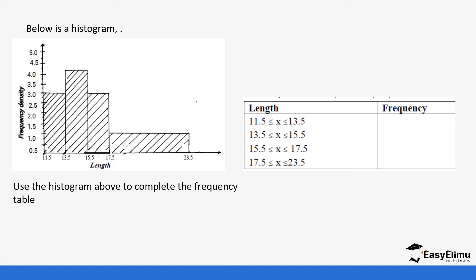We said frequency is equal to frequency density times class width. So let's get the class widths first before we use the formula. We have 13.5 minus 11.5 which gives us 2, then 15.5 minus 13.5 which also gives us 2, then 17.5 minus 15.5 which gives us 2, and finally 23.5 minus 17.5 which gives us 6. So the first three are equal but the last one is not equal.